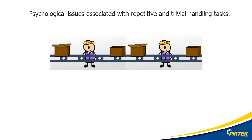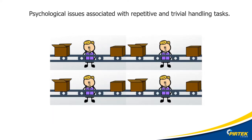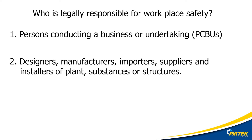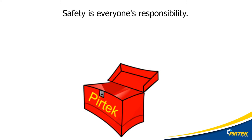Who's legally responsible for workplace safety? First, persons conducting a business or undertaking — a PCBU — otherwise your employer or the company that you work for. Second, the designers, manufacturers, importers, suppliers and installers of plant, substances or structures. Third, officers — basically your direct supervisor. Irrespective of the legal definition of who is responsible for safety, safety is everybody's responsibility.